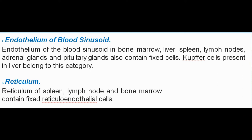The endothelium of blood sinusoids in bone marrow, liver, spleen, lymph nodes, adrenal glands, and pituitary glands also contains fixed cells. Kupffer cells present in the liver belong to this category.